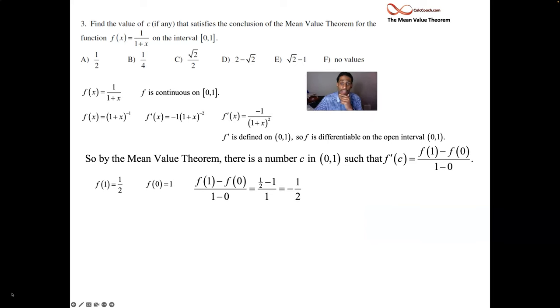Some place will be guaranteed that the derivative will be equal to negative 1 half. We have the derivative right here, negative 1 over the quantity of 1 plus x squared. So we're going to take that derivative. We're going to set it equal to negative 1 half. Mean value theorem guarantees that there's such a value. What value makes this true?